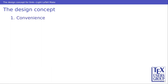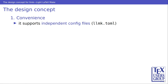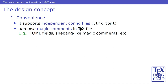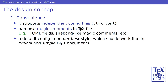The first perspective of the design concept is convenience — that is, what makes LLMK simple and easy to use. It supports an independent configuration file named llmk.toml, and at the same time it supports magic comments in TeX files. That includes TOML fields, which is the original format for LLMK, and shebang-like magic comments, and so on. I will describe these in detail later. The default configuration of LLMK is a do-our-best style, which should work fine for typical and simple LaTeX documents, so for typical simple documents you don't have to write any configuration at all.